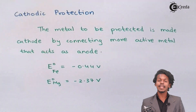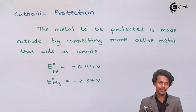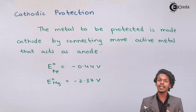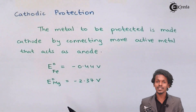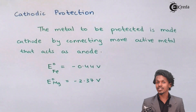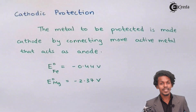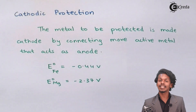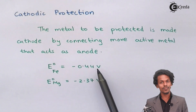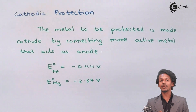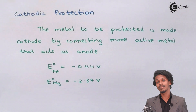To protect these pipes, we connect them via wire to a particular element that gets oxidized and acts as the anode. That component undergoes oxidation while the iron shows the process of reduction, acting like a cathode. For example, if the iron pipe with a reduction potential of -0.44 V is connected to a magnesium block with a reduction potential of -2.37 V,